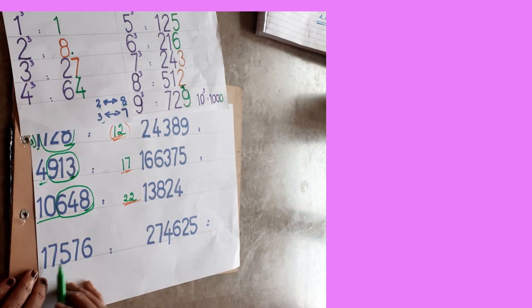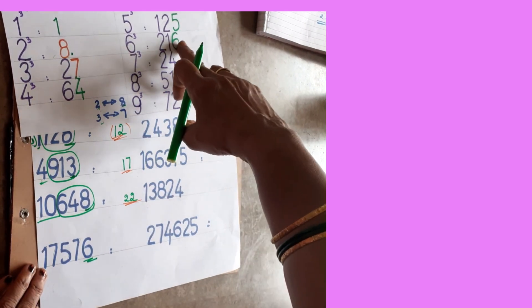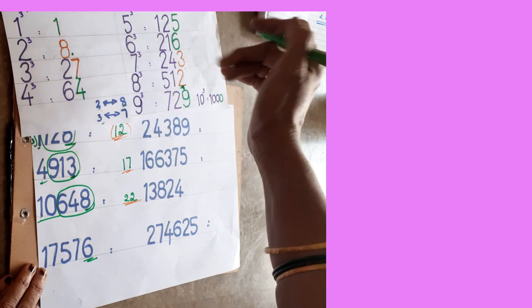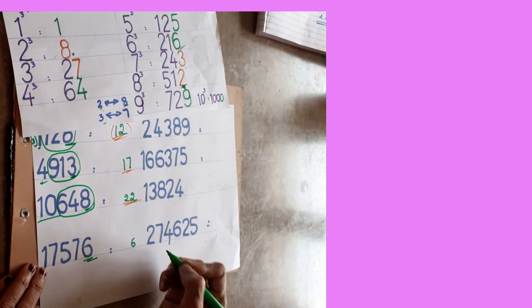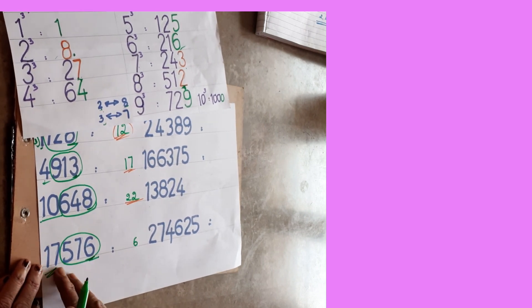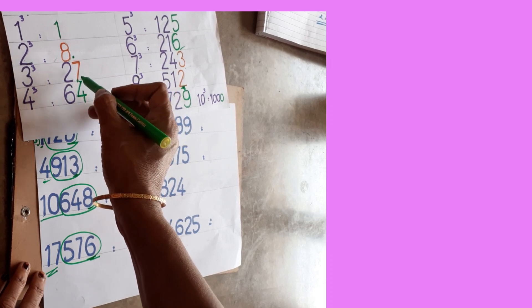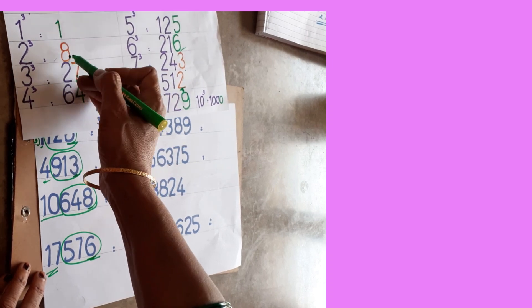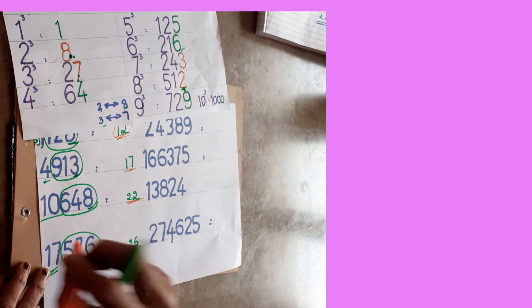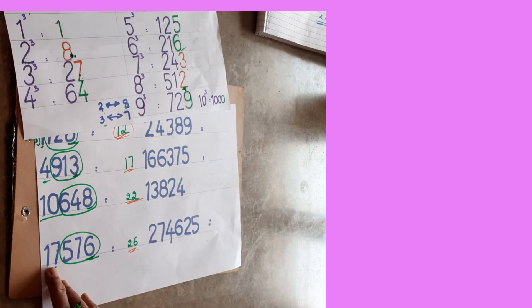Next: 17576. Units place is 6 — same digit rule: 6 cube gives 6 in units place, so write 6. Eliminate 3 digits — remaining is 17. 17 is nearby which cube? 2 cube is 8, 3 cube is 27 — 27 is more, so take lesser: 2. Answer is 26. Check: 26 × 26 × 26 = 17576.